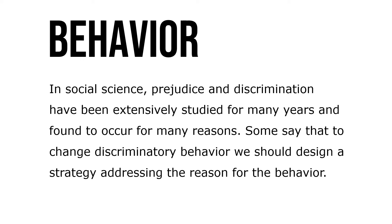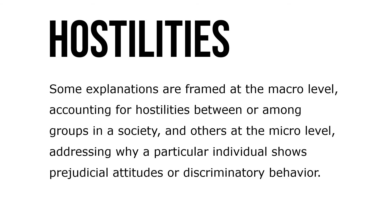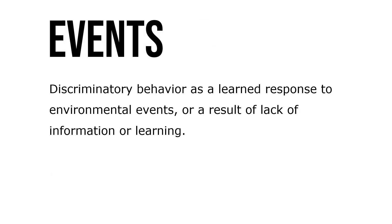In social science, prejudice and discrimination have been extensively studied and found to occur for many reasons. Some say we should change discriminatory behavior through a design strategy addressing the reason for the behavior. Some explanations are framed at the macro level, accounting for hostilities between or among groups in a society; others at a micro level, addressing why a particular individual shows prejudicial attitudes or discriminatory behavior. Discriminatory behavior is a learned response to environmental events or as a result of information or learning.